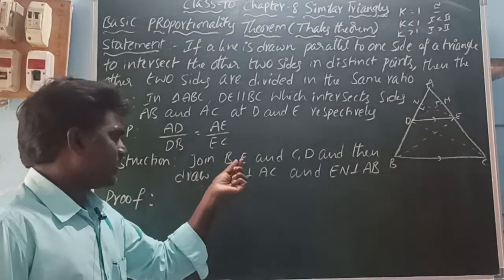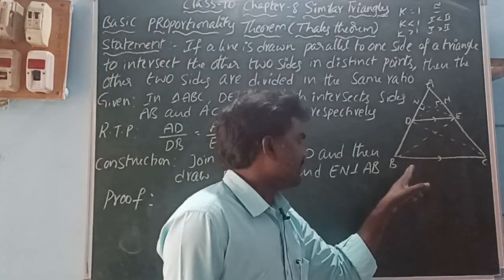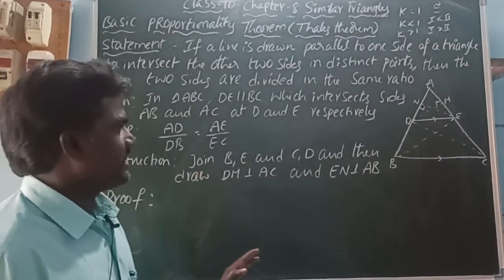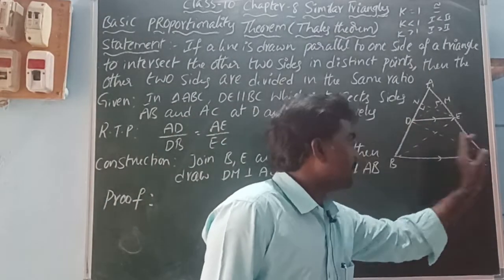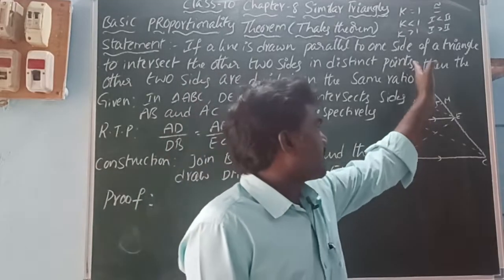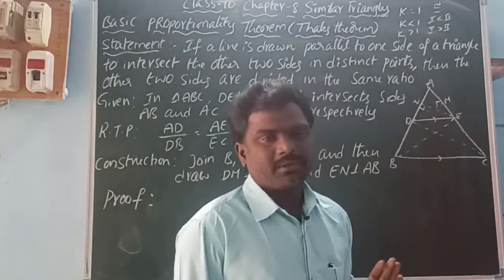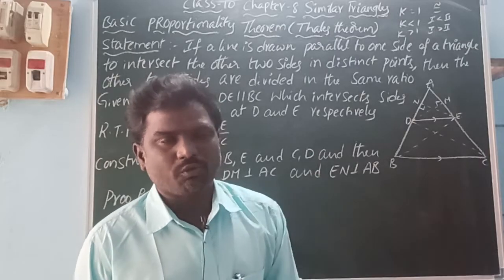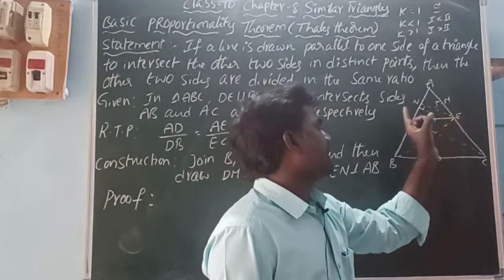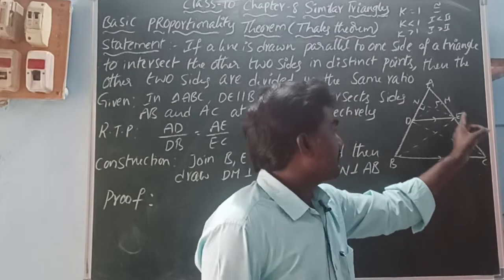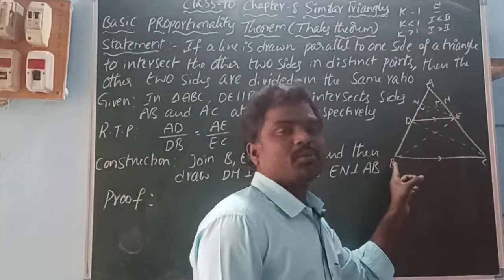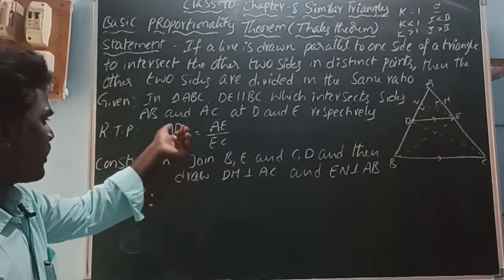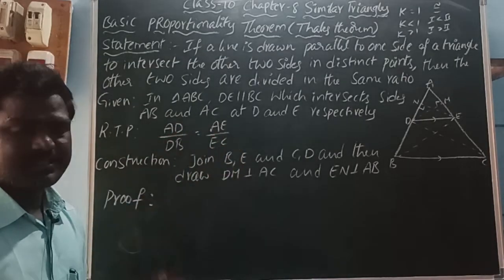Construction: join BE and CD, and draw DM perpendicular to AC, and EN perpendicular to AB. DM is perpendicular to AC, meaning the angle formed is 90 degrees. EN is perpendicular to AB. How can we prove AD by DB is equal to AE by EC? By taking the area of the triangles.